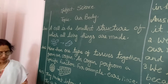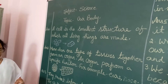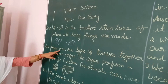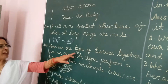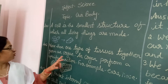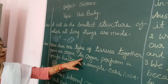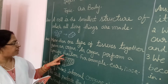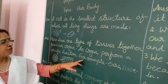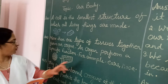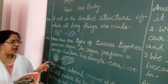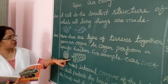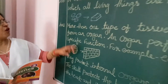Question number 2: What is an organ? I will give some example. More than one type of tissues together form an organ. An organ performs a specific function. For example, the ear. It is a tissue tied in a wall.